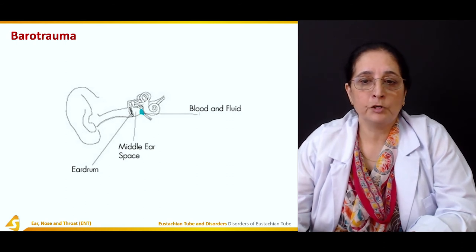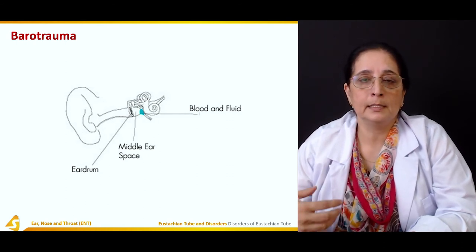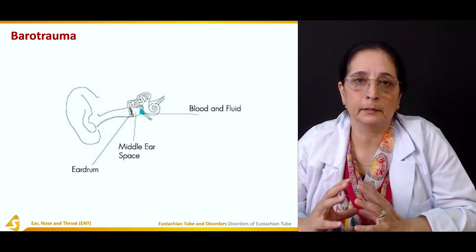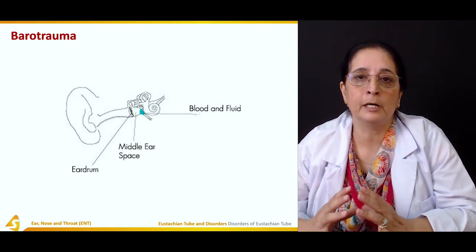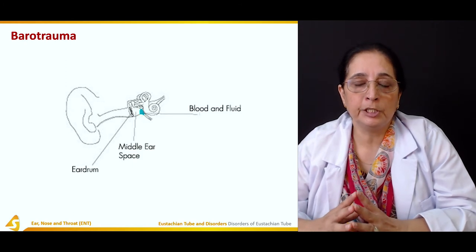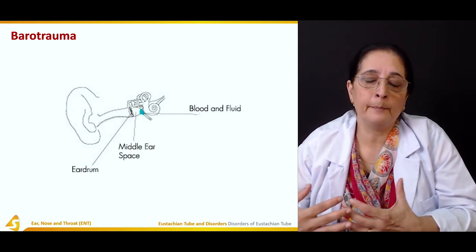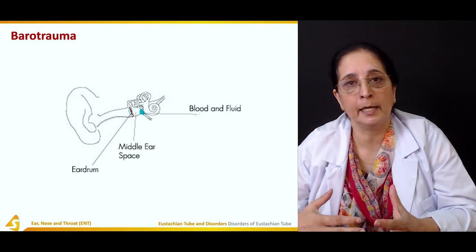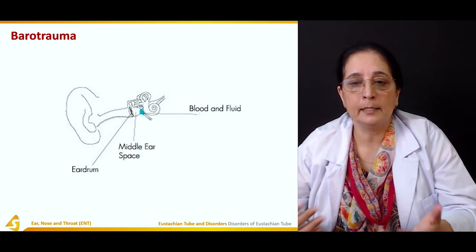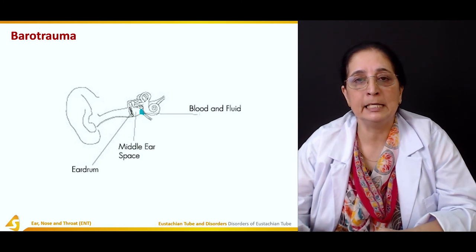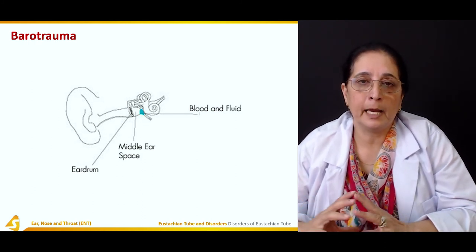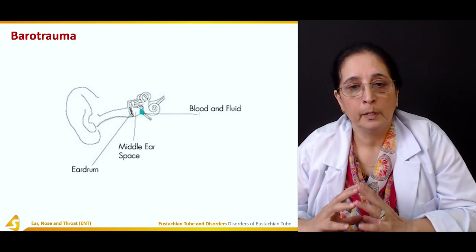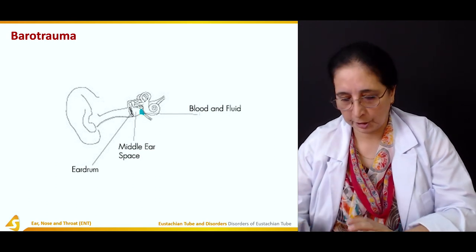Barotrauma mainly affects the functioning of the Eustachian tube due to abnormal pressure differences between the outside and the middle ear. This can sometimes lead to fluid and blood discharge from the Eustachian tube because of the high pressure differences.